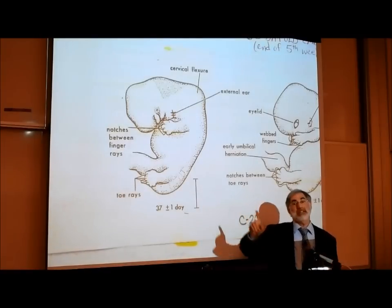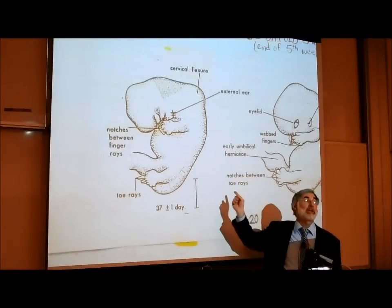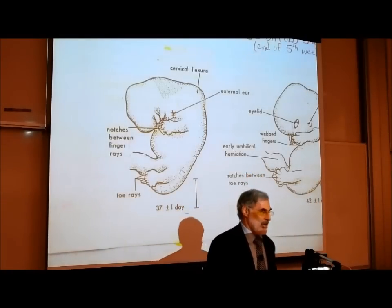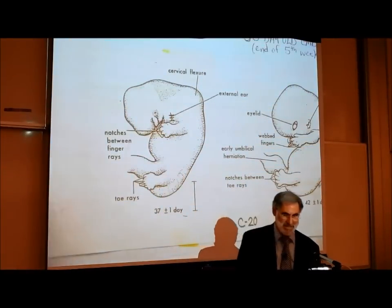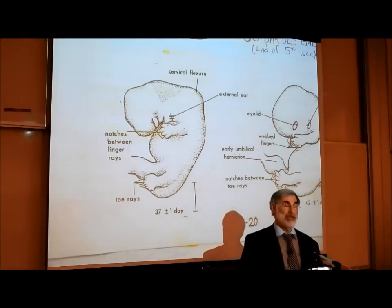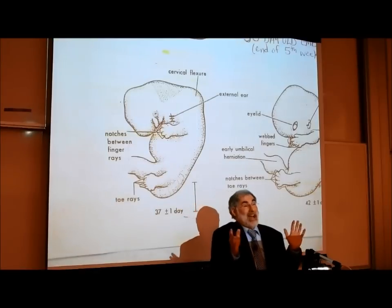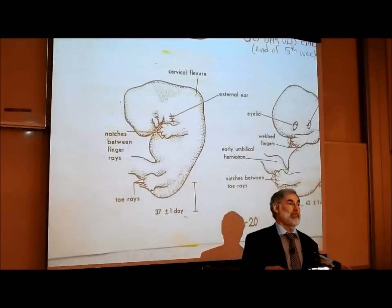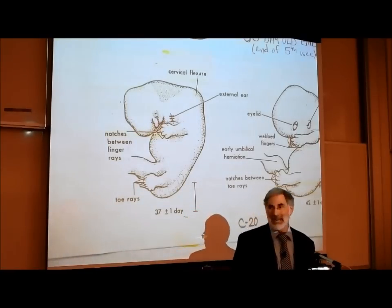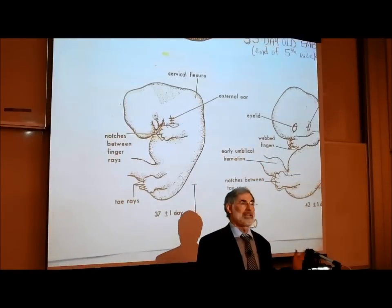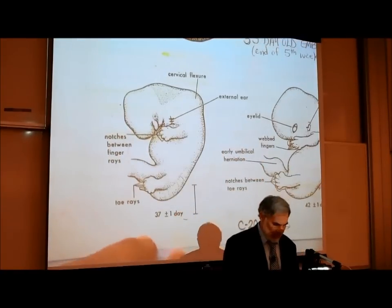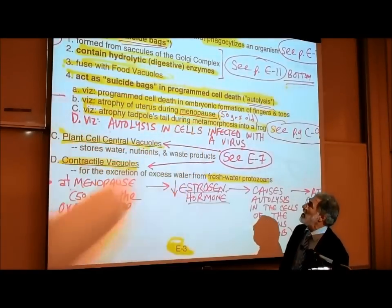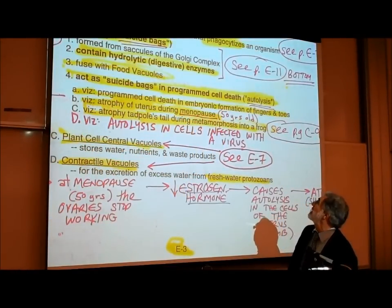Do you think this ever happens today where medications not available in the United States are available in Canada or Mexico? The only American women who gave birth to deformed thalidomide babies are women who went to Canada to get that medication. Various medications can interfere with development, so when women are pregnant, doctors basically don't want to prescribe anything — only Tylenol or penicillin for infection, because they're worried that anything could interfere with the normal development of the baby.